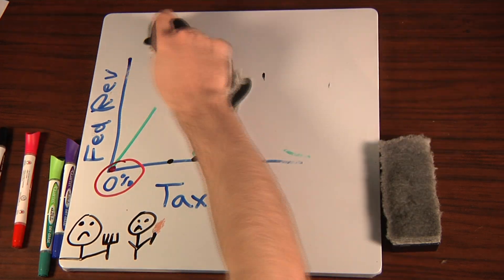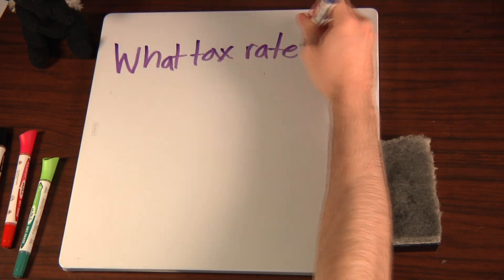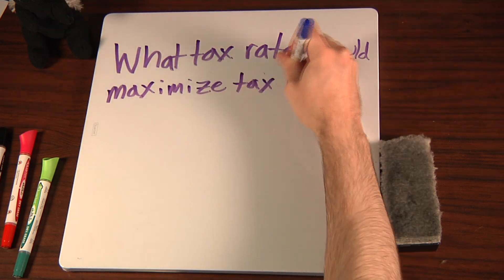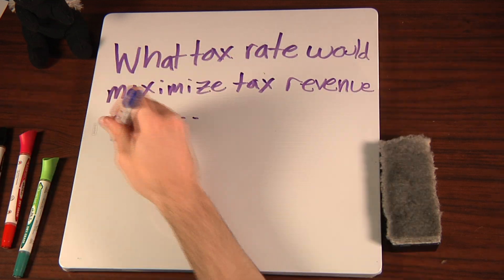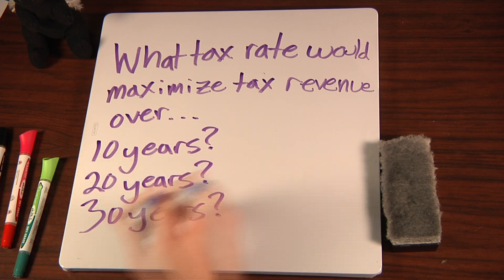To better understand this, let's set up an experiment. Say we could pick just one tax rate to maximize revenue over the next 10 years. But we could pick a different rate if the time were to be expanded to 20 years, or 30, or so on. Would they each be different?